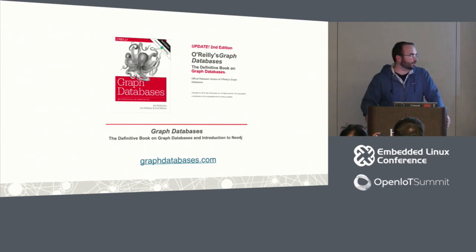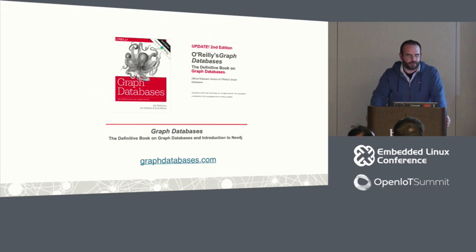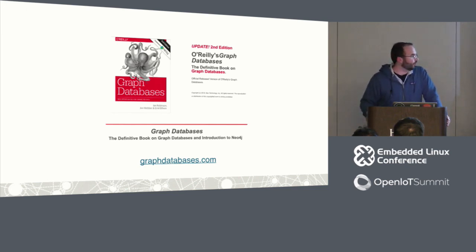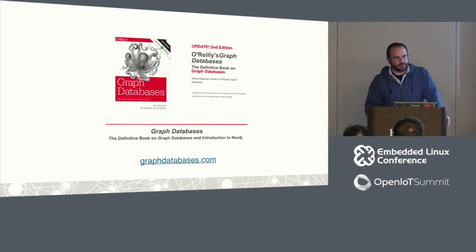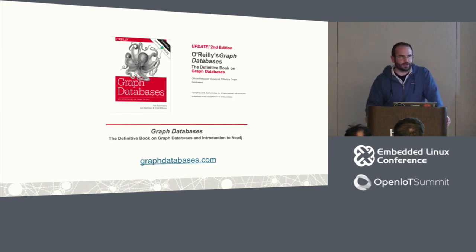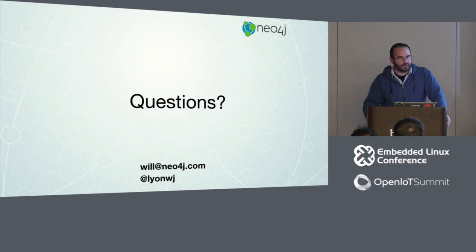If you're interested in learning more about graph databases, there's a downloadable O'Reilly book at graphdatabases.com with lots of use cases and code samples. The takeaways from these use cases are: there's more value to be derived from the structure of your sensor network using graphs, and graphs offer the ability to combine data sets from both sensors and other sources. That's all I have — any questions?